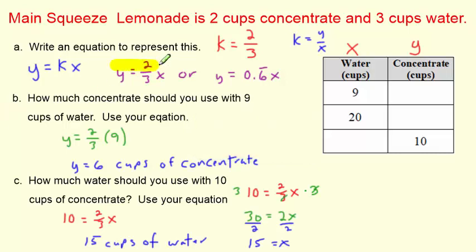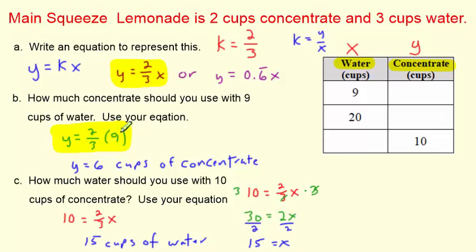We're going to use our equation y equals 2 thirds x and plug in values. For part b, how much concentrate should I use? Concentrate is the Y variable, and water is X. I know x is 9 cups of water, so y equals 2 thirds times 9. Two-thirds times 9 — two times 9 is 18 divided by 3 — is 6. So 6 cups of concentrate.